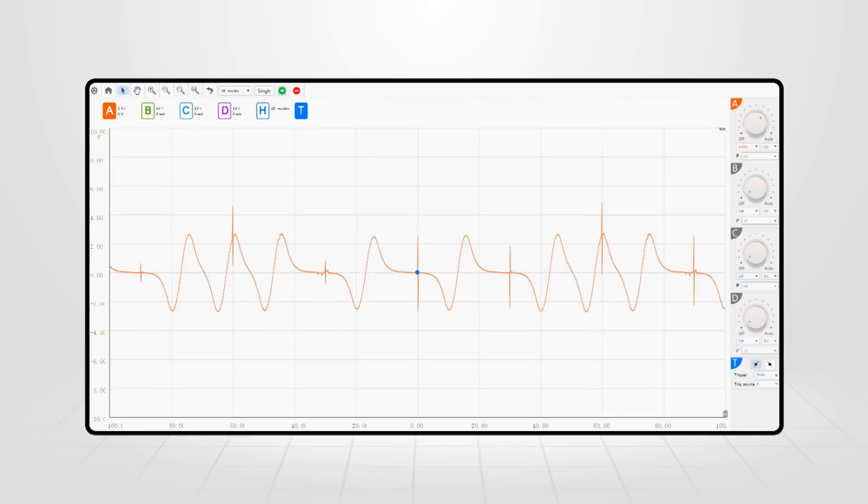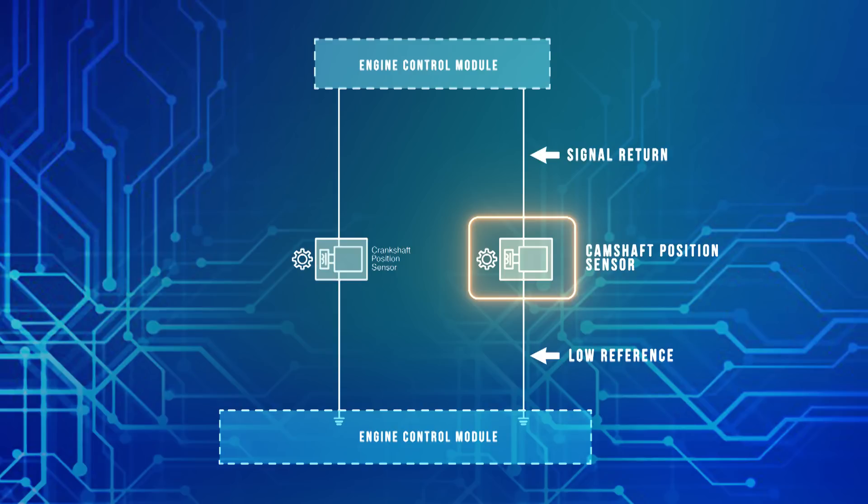Older type sensors are typically analog, producing a sine wave output. This type of sensor has two wires, using a low reference and a signal return.